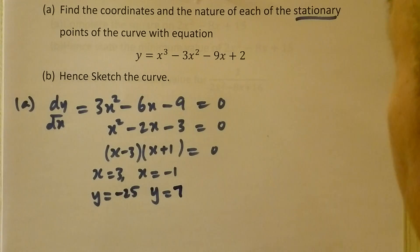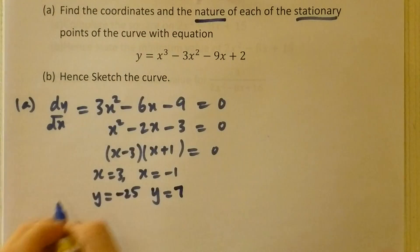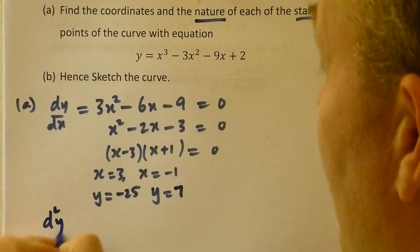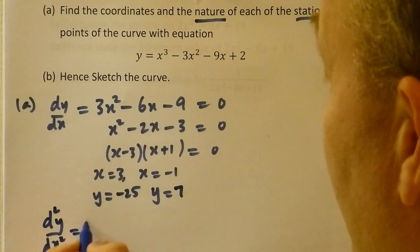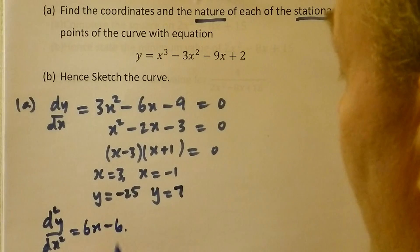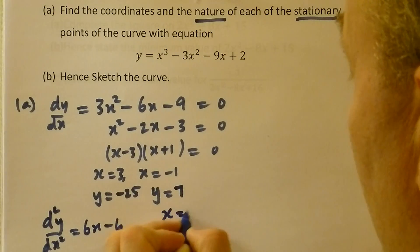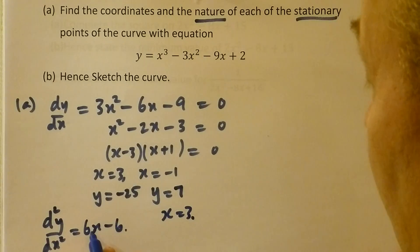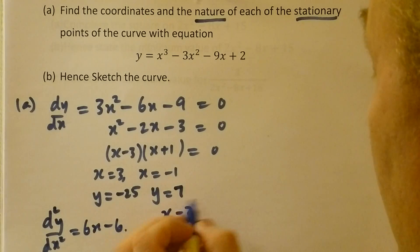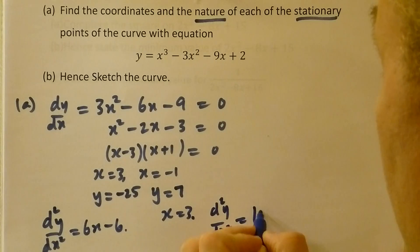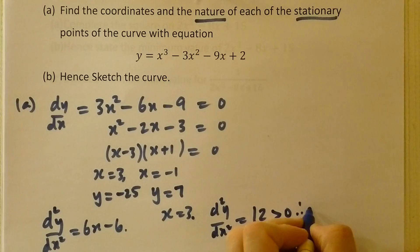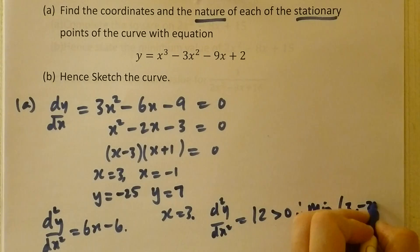To find the nature of the stationary points, we require the second derivative, which is 6x - 6. If I put x equal to 3, I get 18 take 6, which is 12, which is greater than 0. Therefore, we have a minimum value at (3, -25).